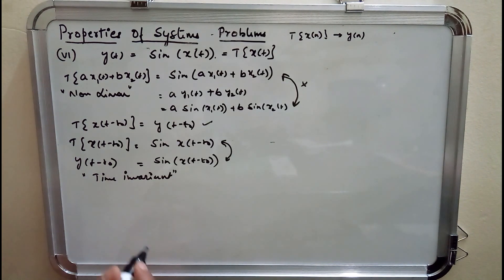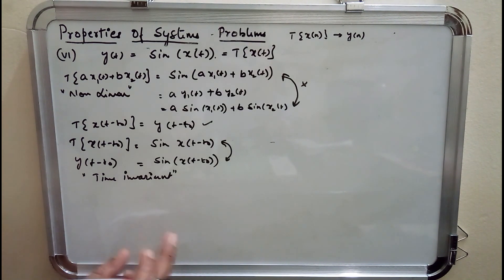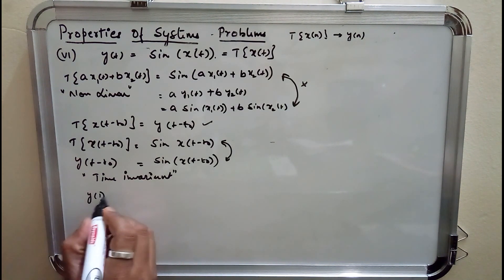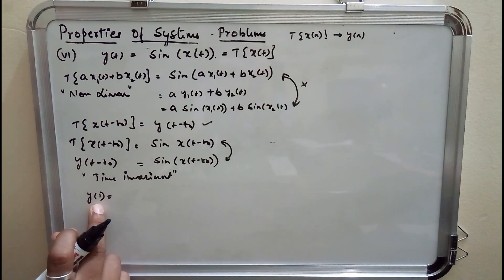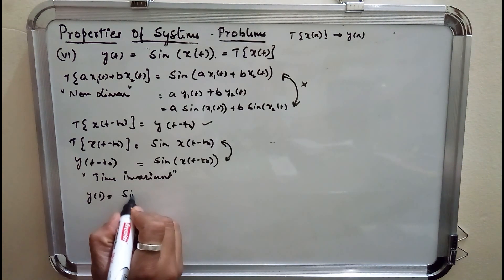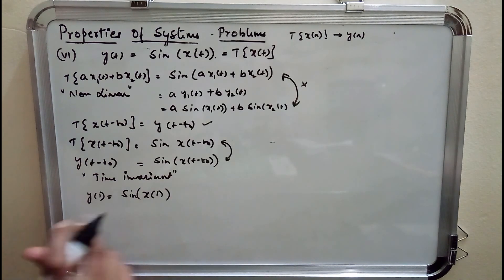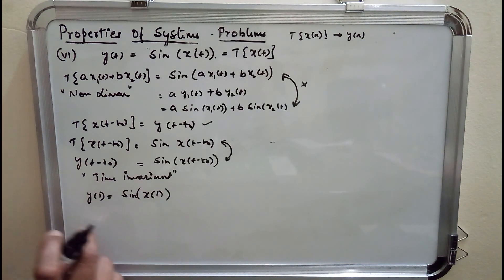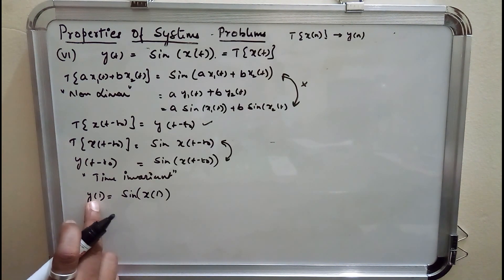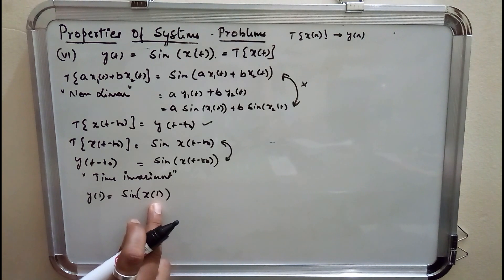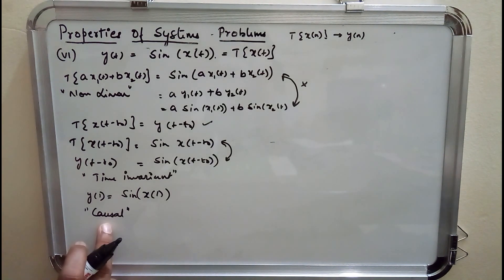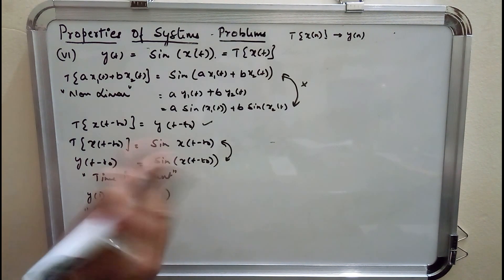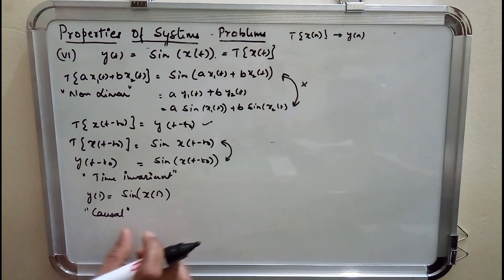Coming to causality: a system is said to be causal if output at one instant depends upon the input at the same instant or past instant. Output at t = 1 is sgn(x(1)) — output at one instant depends upon the input at the same instant, hence it is a causal system. The system would be non-causal only if output at one instant depends upon the input at a future instant, which is not the case here.